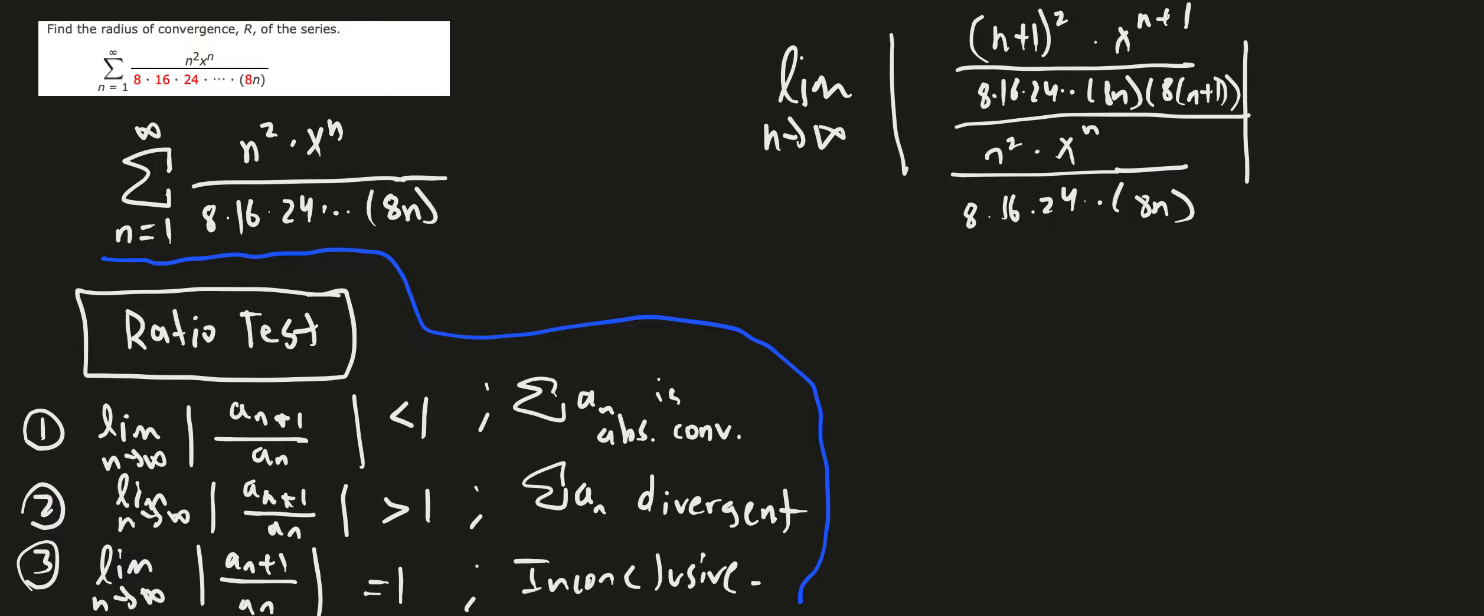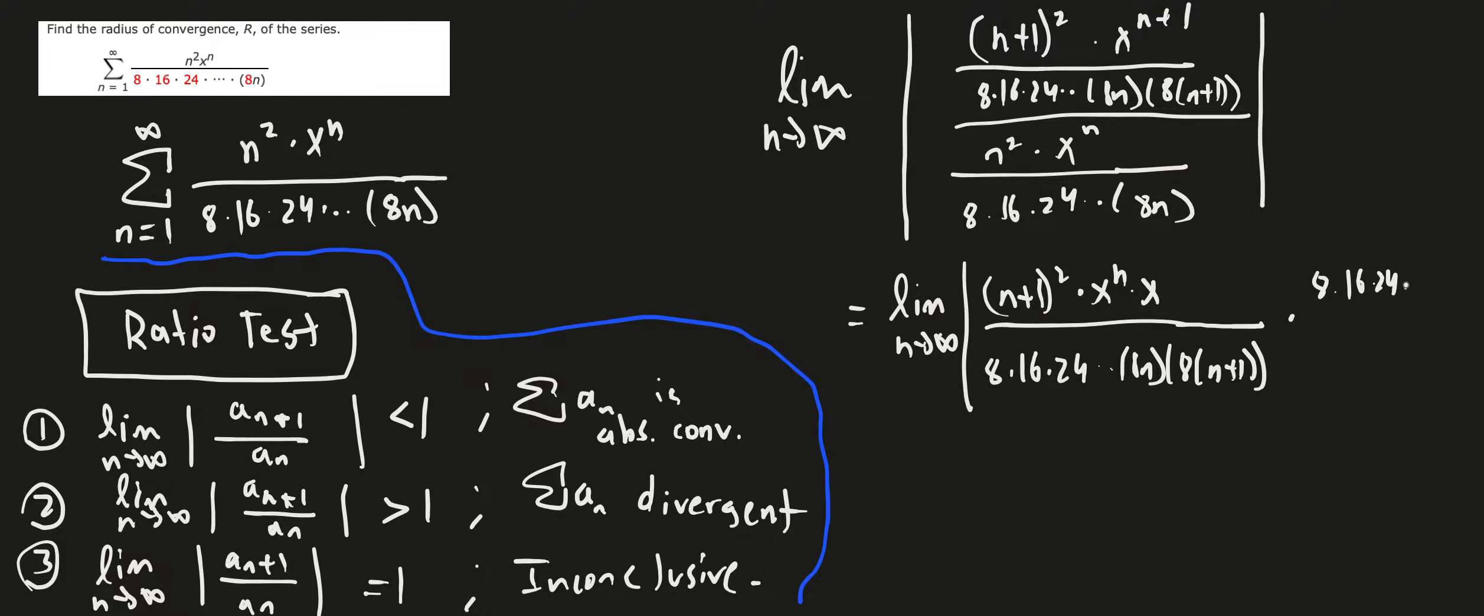So this is what you have for your limit. It's kind of nasty at the moment, but if you try to use your algebra, you can try and write this as multiplying by the reciprocal. This is going to be times x to the n times x. That's what we have because it's x to the n plus 1, so we can write it out like that, and then divide by 8 times 16, 24, dot dot dot, 8n, 8 times n plus 1. And then multiply this by the reciprocal, which is 8 times 16, 24, dot dot dot, 8n divided by n squared times x to the n power.